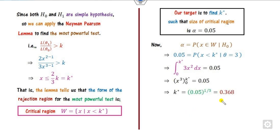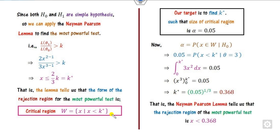The cube root of 0.05 gives the value of k*. Substituting this value back into the critical region, you obtain the most powerful test critical region. That is the target of this Neyman-Pearson lemma, and this is how you solve the problem.